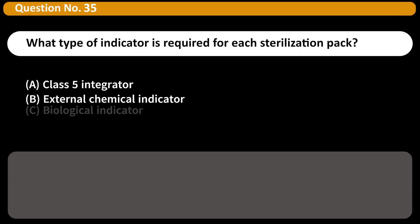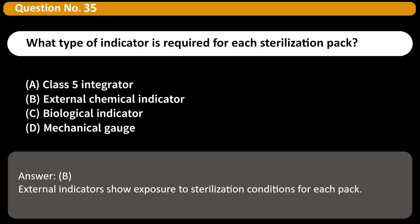What type of indicator is required for each sterilization pack? A. Class V integrator, B. External chemical indicator, C. Biological indicator, D. Mechanical gauge. Answer B. External indicators show exposure to sterilization conditions for each pack.